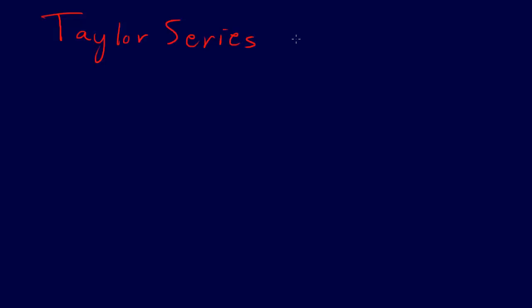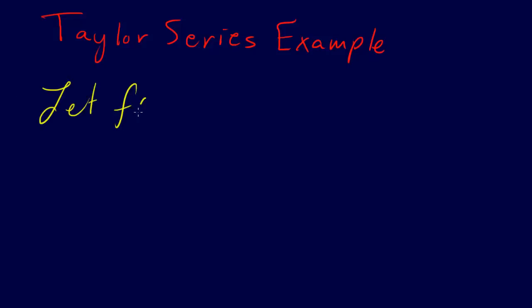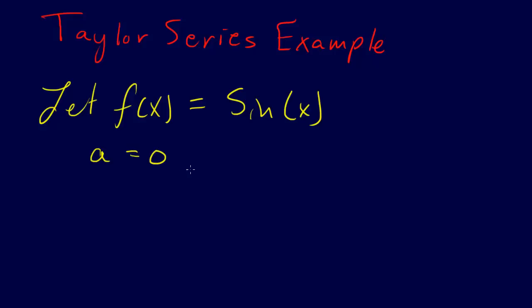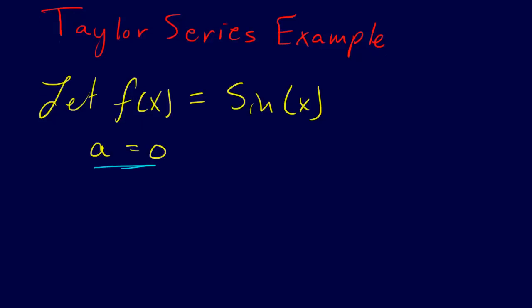Alright, so now we're going to do a Taylor Series example. For this example, we're going to let f of x equal the sine of x, and a equal 0. You'll notice that this is a special case — this is the Maclaurin Series, where a equals 0. We're going to do this because it makes the math easy, and the whole purpose of this example is to get an idea of how this really works.